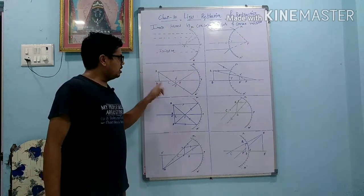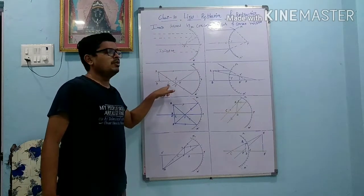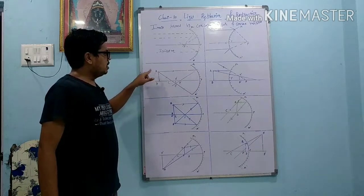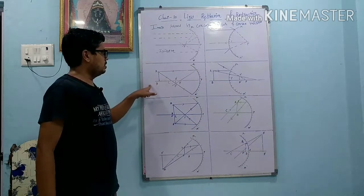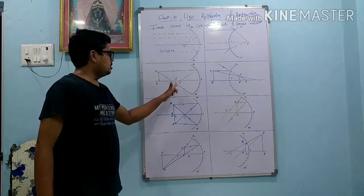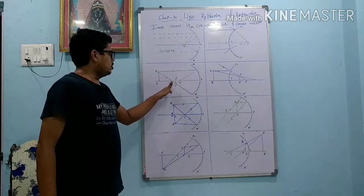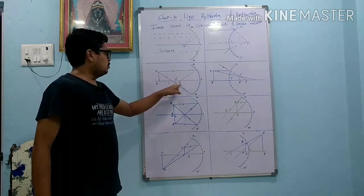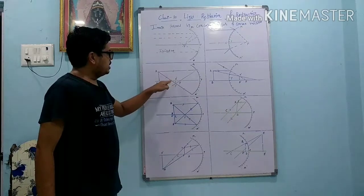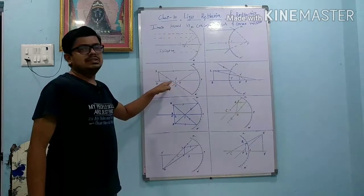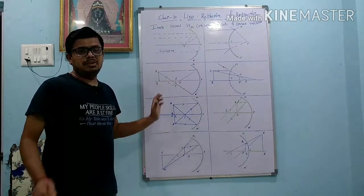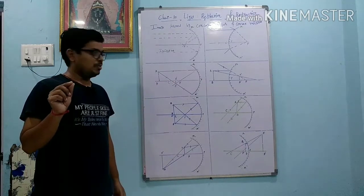Second case: if we keep the object beyond the centre of curvature - here the object is AB - then the rays after reflection meet between the centre of curvature and principal focus. The image A'B' is obtained between them, and it is a real and inverted image. The size is diminished - diminished means point-like.